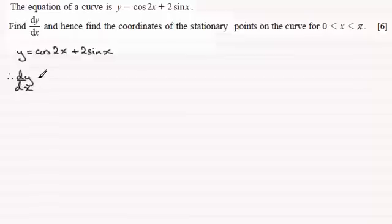Differentiating with respect to x, if you differentiate cosine 2x, the differential of cosine anything is going to be minus sine, and using the chain rule we're going to get minus 2 times the sine of 2x.